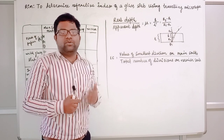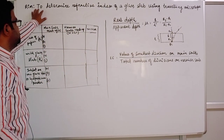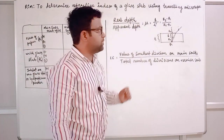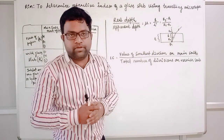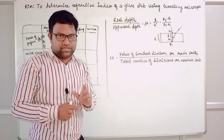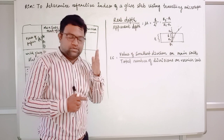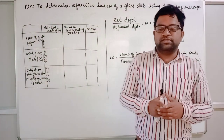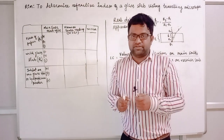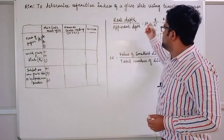Today in this video we will discuss an experiment to determine the refractive index of a glass slab using the traveling microscope. We will use a traveling microscope to determine the refractive index of a glass slab. A glass slab and a traveling microscope will be given to us, and we will see how we can measure the refractive index from the given formula.